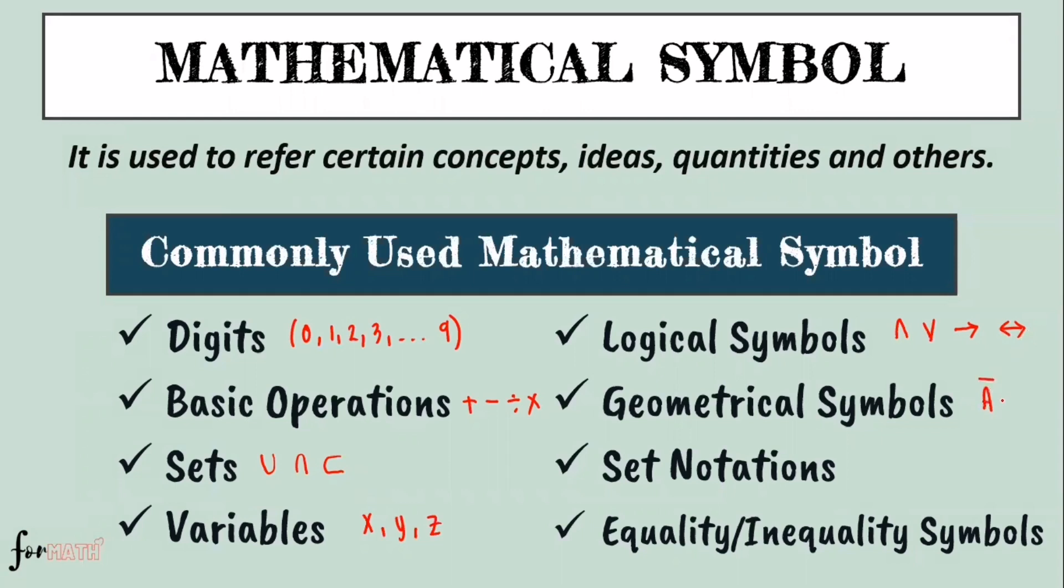Geometrical symbols, example, the line on top means a line segment, or a line with arrow on top means a line, or with one arrow means a ray. Next is set notations. What are set notations?